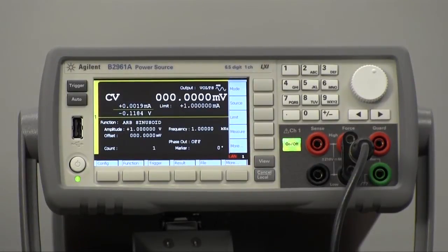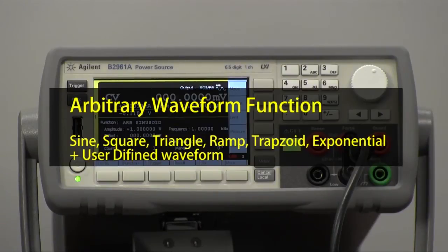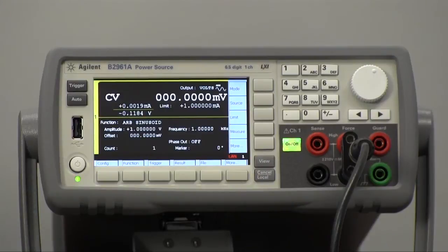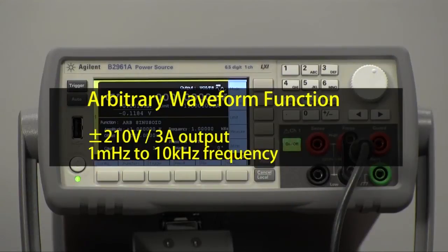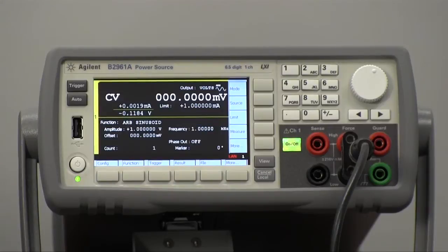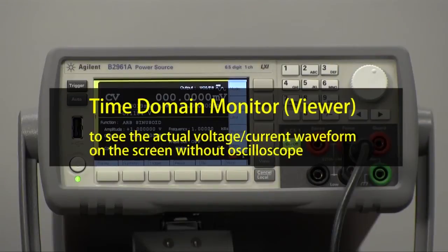It also has some built-in sourcing functions which you can do in either voltage or current. It's got six built-in functions such as sine wave, square wave, triangle wave, and also a seventh arbitrary waveform generation function. In addition, the screen allows you to actually monitor your waveforms in the time domain in real time as you're making measurements.